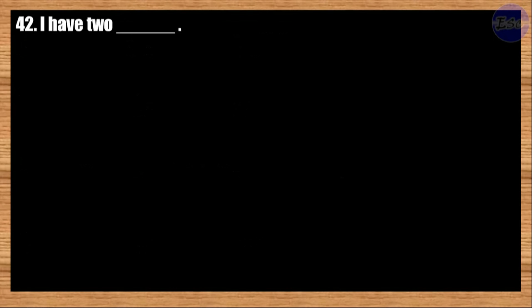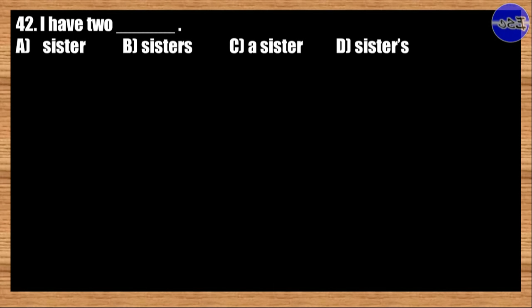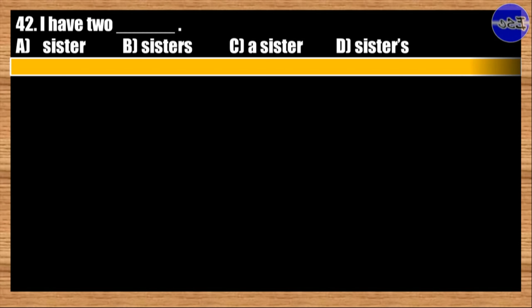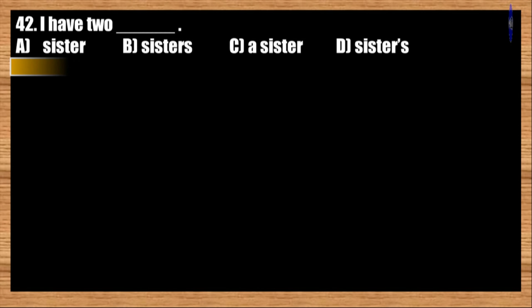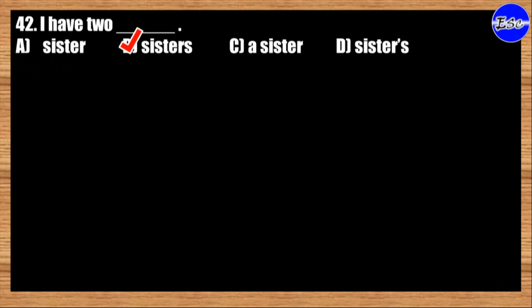Number forty-two: I have two blanks. A: sister; B: sisters; C: a sister; D: sisters. The best answer is option B. I have two sisters.